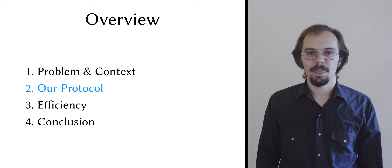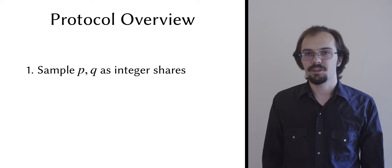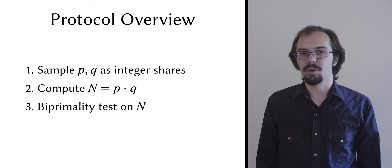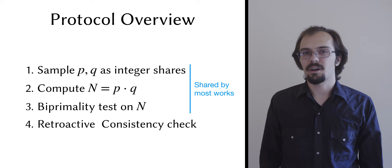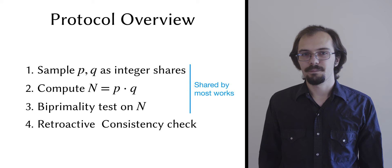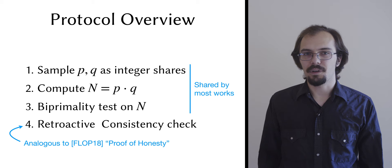Our protocol has a simple layout. First, it securely samples candidate factors p and q, then it securely multiplies those factors to produce a candidate bi-prime, which it subjects to the Bonet-Franklin bi-primality test. And finally, it runs a retroactive consistency check to ensure no malicious behavior occurred during the previous phases. The first three parts of this layout are common among almost all bi-prime sampling protocols. They come from Bonet and Franklin. Our consistency check is new, but it can be thought of as somewhat analogous to the proof of honesty used by Fredrickson et al.